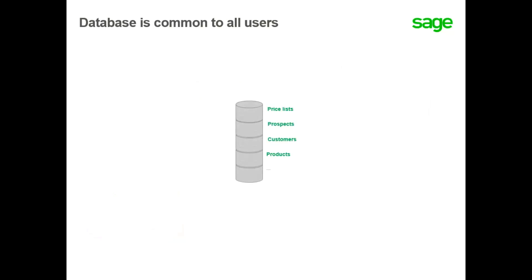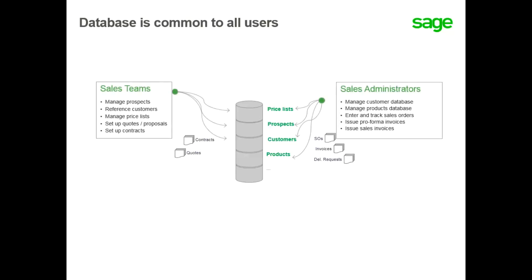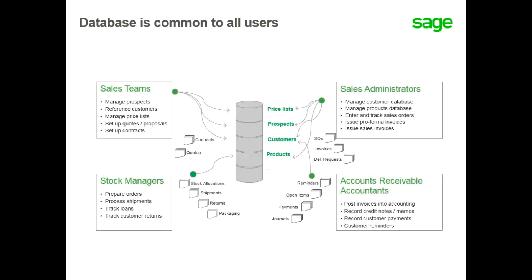In the system, the flow is very fluid because all the information is stored in one database which is accessible to all players in the sales process. The key users for the sales process are the sales team, sales administration, stock managers, and AR accountants. The database is also common to all users.